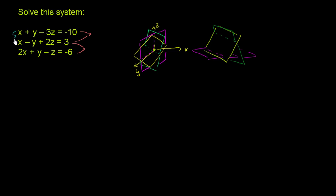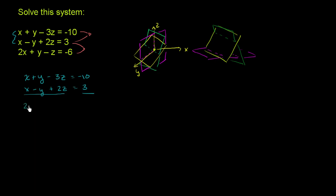So first, let's add the first two equations. We have x + y - 3z = -10 and x - y + 2z = 3. To eliminate y, we just add them. On the left side: x + x is 2x, the y terms cancel out, and -3z + 2z gives -z. On the right: -10 + 3 is -7. So using these two equations, we get 2x - z = -7.